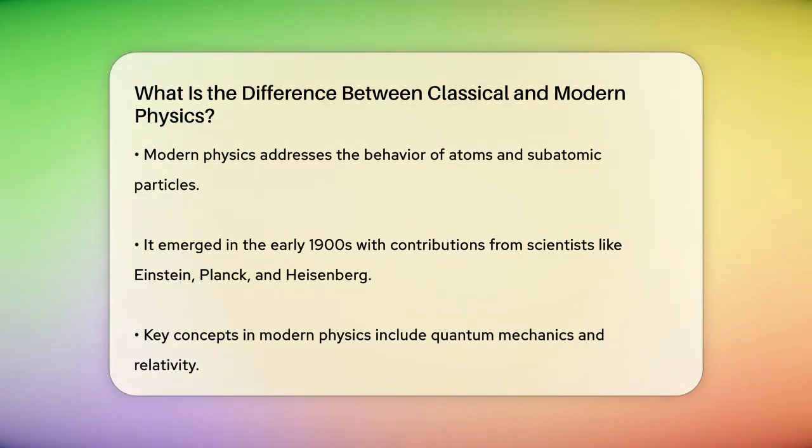On the other hand, modern physics is all about the tiny things we can't see, like atoms and subatomic particles. It started to take shape in the early 1900s with revolutionary ideas from scientists like Einstein, Planck, and Heisenberg.